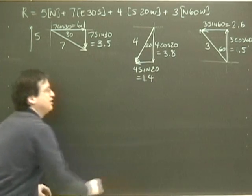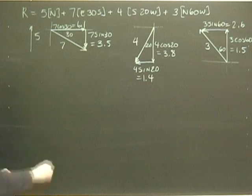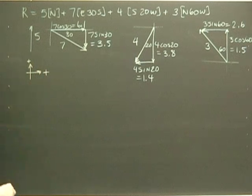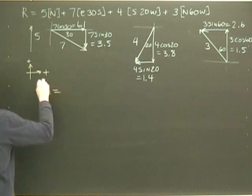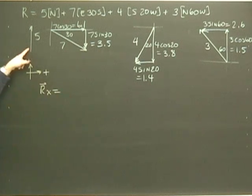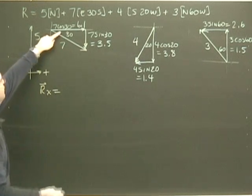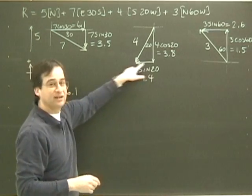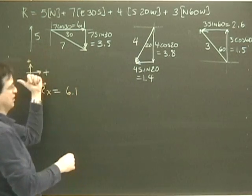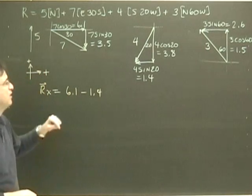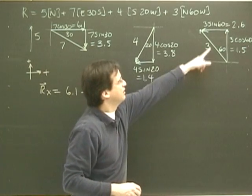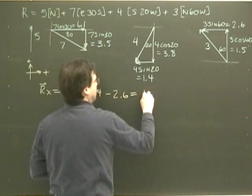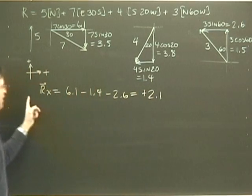Now what I need to do is I need to put on a sign convention. So what we're going to say is up is positive and to the right is positive for my x and y coordinates. So let's look at the x direction. The resultant in the x direction, well, the 5, it doesn't have any x component. This one, it's 6.1 and it's to the right, so it's positive 6.1. The 1.4 is my x component on this triangle, and it's backwards, it's to the left, so it's minus 1.4. Over here, the next one is 2.6 to the left, so that's minus 2.6. And so in the x direction, I end up with positive 2.1. I've added up all my x's.